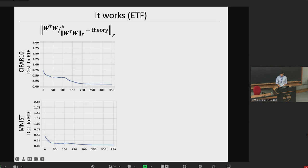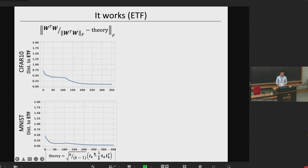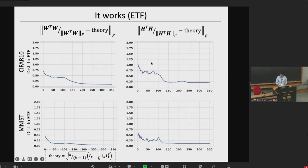To check the ETF geometry, one way is to look at the normalized Gram matrix and compare it to what theory suggests — here, identity minus the rank-one component matrix. Again, as training progresses, this metric goes down, both for CIFAR and MNIST, and is also true for the embeddings. For embeddings, you have a little bit worse convergence, but the trend is there.